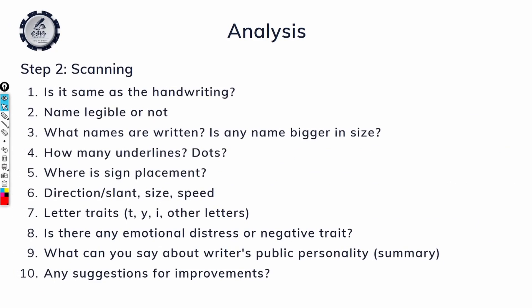That's all for the sample step — blue ballpoint pen, writing sample if possible, ask the writer's name, and which signature they use most. The second step is scanning. Scanning means you are going to look at the signature before analyzing it. Here are some steps I've mentioned — you can have your own, but at the beginner level it's best to follow these steps.